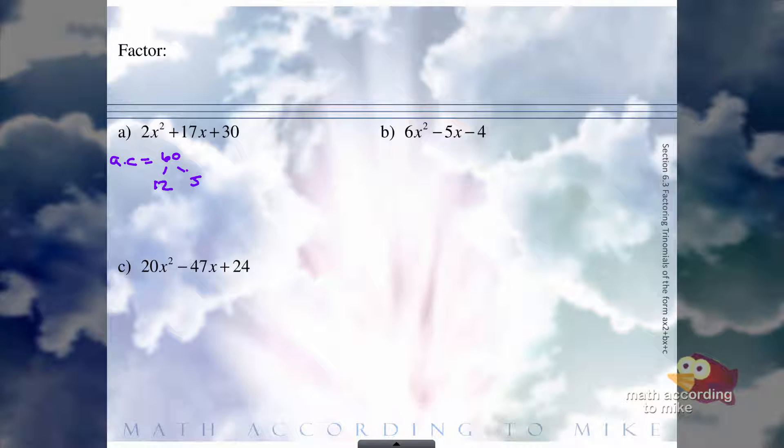And you can say 12 and 5. So instead of 17x we can say 12x plus 5x. Again, you could say 5x plus 12x, does not matter. When you have your four terms here, we're going to group the first two, group the second two.